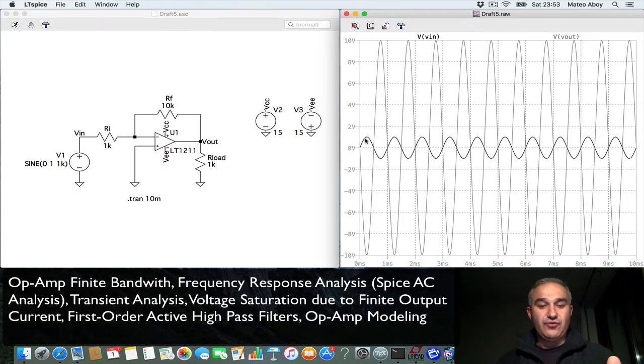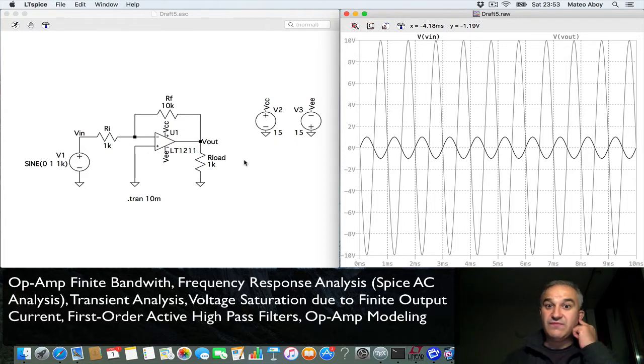and it is scaled with a gain of 10. If you recall, an inverting amplifier has a gain of minus Rf over Ri. Rf is 10k, Ri is 1k, gain of 10, inverted 180 degrees. It is not saturating in this case because we are powering the operational amplifier with plus minus 15, and as you know the saturation voltage is around 14 to 14.3.